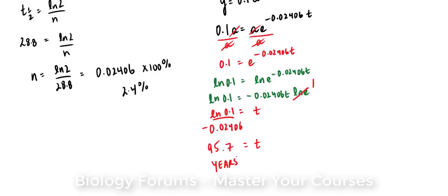So it will take 95.7 years for 90% of that original mass of strontium to go away. Hypothetically, if we had a slab of strontium-90, 100 grams, it would take 95.7 years for you to only have 10 grams left.